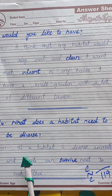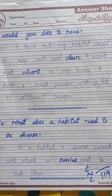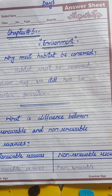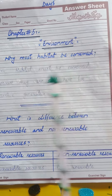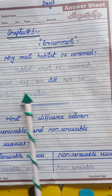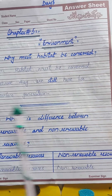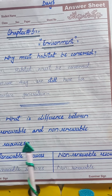Why does a habitat need to be diverse? If a habitat is diverse, animals and plants can survive next to each other. Why must habitats be conserved? Habitats must be conserved because they need to still be here for future generations.